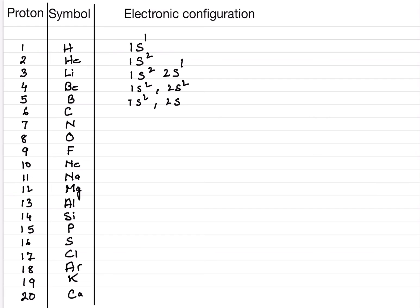Beryllium is 1S2 2S2, giving 4 electrons. Boron has atomic number 5, so its configuration is 1S2 2S2 2P1 — that is 2 plus 2 plus 1, equaling 5. Carbon has atomic number 6, so it is 1S2 2S2 2P2, giving 6 electrons. Nitrogen has atomic number 7, so it is 1S2 2S2 2P3, giving 7 electrons.